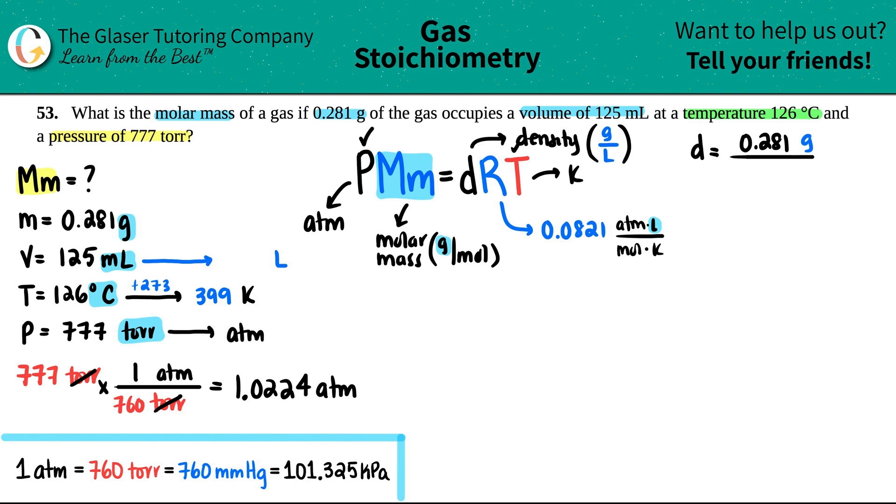But we know how to go from mils to liters, right? You just divide by 1000. Similarly, you just take the decimal and move it over three spots. So this would be 0.125 liters. And that's what goes at the bottom.